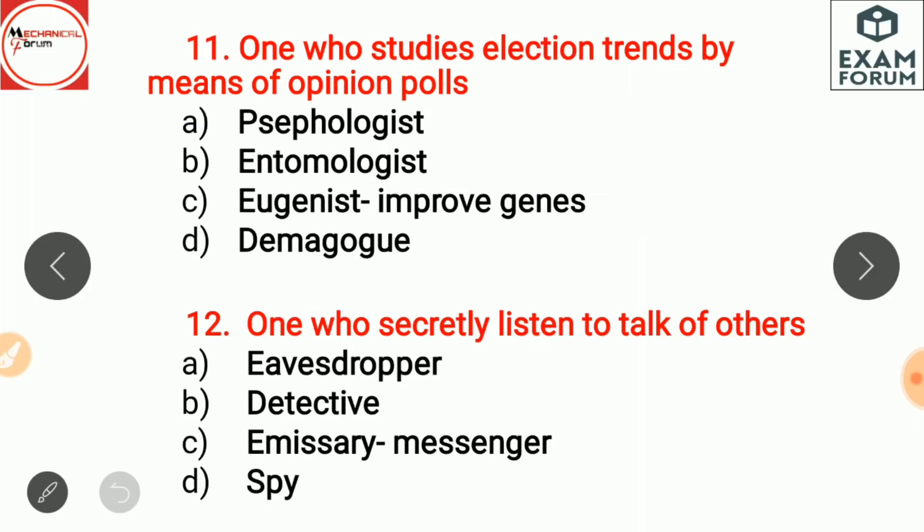One who studies election trends by means of opinion polls is a psephologist. An entomologist is one who studies insects. A eugenist is a person who tries to improve the genetic quality of a species. A demagogue is a political leader who seeks support by appealing to popular desires and prejudices.